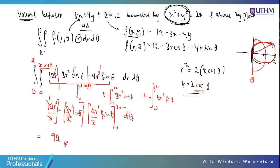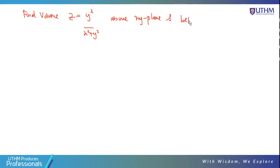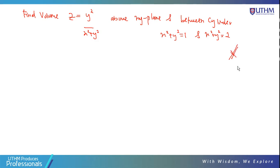Practice problem: find the volume of z = x² + y² above the XY plane and between the cylinders x² + y² = 1 and x² + y² = 2. Try solving using polar coordinates. The expected answer is π/2.